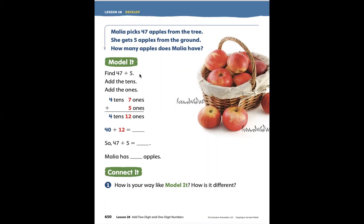Find 47 plus 5. Add the tens, add the ones. So the first thing they did was put their tens together. So they have four tens. We didn't have to add anything. It was just the four tens. That's it.